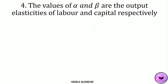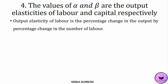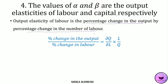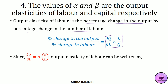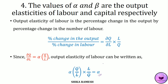The fourth property is that the values of alpha and beta are the output elasticities of labor and capital respectively. The output elasticity of labor shows the percentage change in output with respect to percentage change in the number of laborers, represented as (∂Q/∂L)·(L/Q). We have derived MPL = ∂Q/∂L = α·(Q/L). Substituting, we get α·(Q/L)·(L/Q), and Q and L cancel out, giving alpha — the output elasticity of labor is alpha.